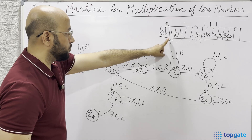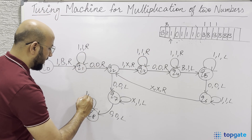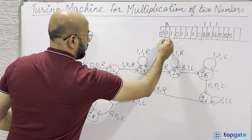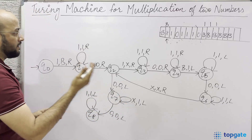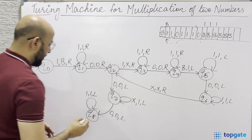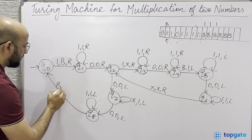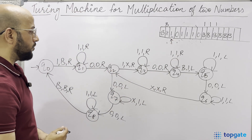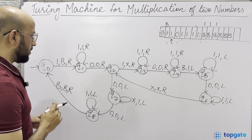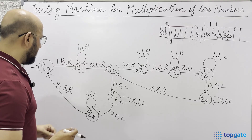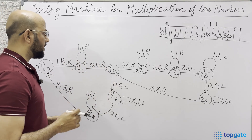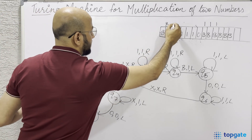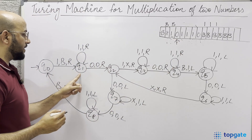At Q8, if you find a B, keep it as B and go right - this blank is skipped and the pointer points to the next 1, returning to state Q0. This completes the first cycle. Now the machine is back at Q0 pointing to the next unprocessed 1. At Q0, it says 1BR: this 1 is changed to B, the pointer moves to the 0 separator, reaching Q1. At Q1, the 0 is skipped and the pointer points to the first 1 of the second number, reaching Q2.